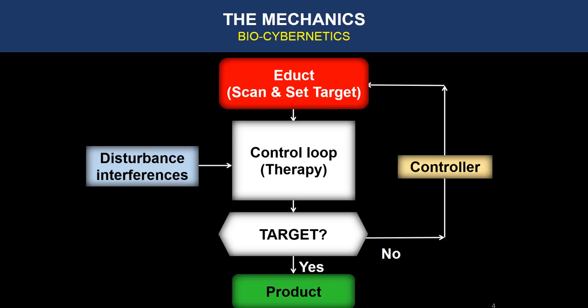This loop continues until it reaches the target. When it achieves the target, you get the finished product and it continues there. But of course, if any interferences change, then the loop will continue. So this is how the mechanism works.